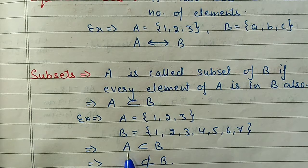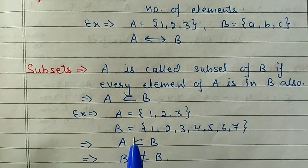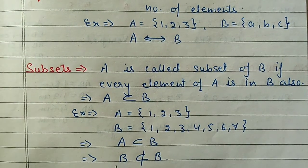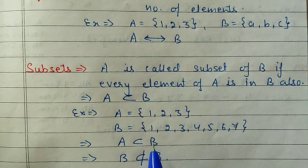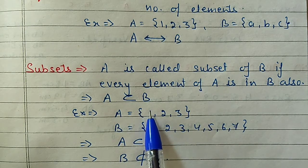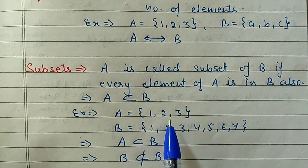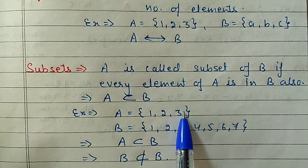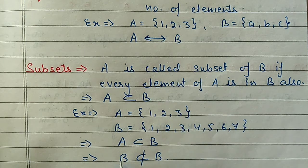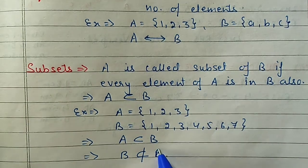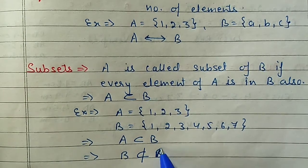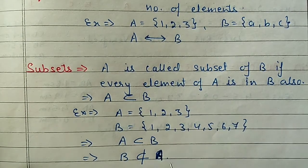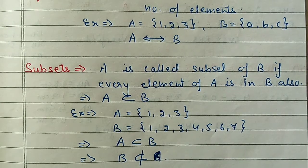We can also check whether B is a subset of A. B has 1 - yes; 2 - yes; 3 - yes; but 4 is not in A. So B is not the subset of A. A is the subset of B but B is not the subset of A. For 'not a subset' we use the symbol ⊄, and for subset we use ⊆.